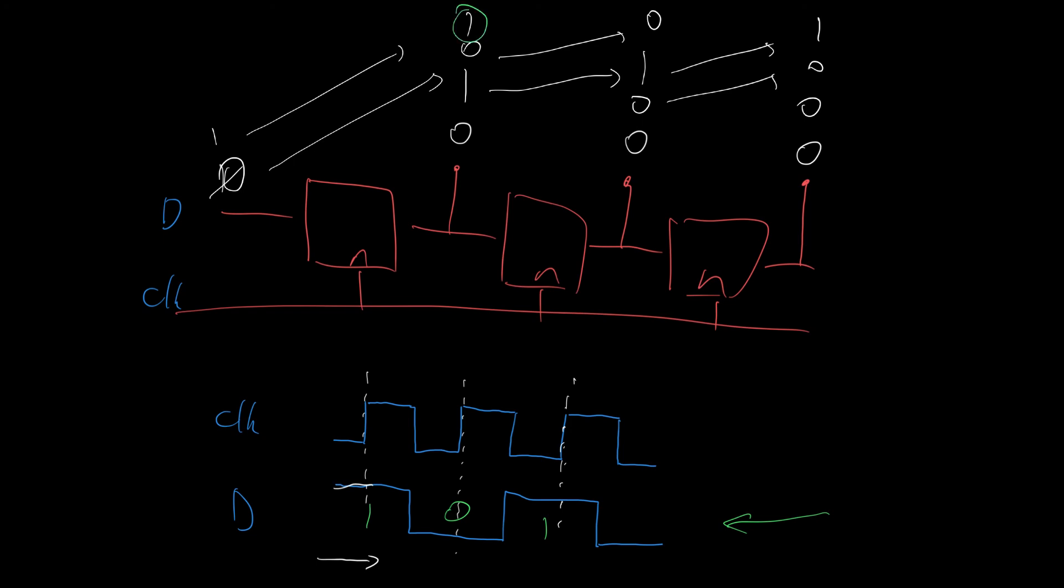We have got a 1, 0, 1. After we finished this sequence here of 3 rising edges of the clock, representing our 3 numbers, 1, 0, 1, on the D pin.